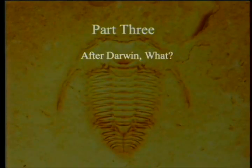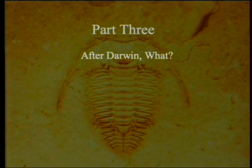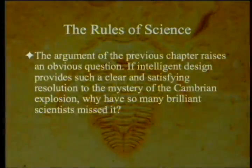We are now getting towards the end of Part 3, After Darwin What? Intelligent design has been presented, and now one of the major objections to intelligent design is being given: the rules of science.